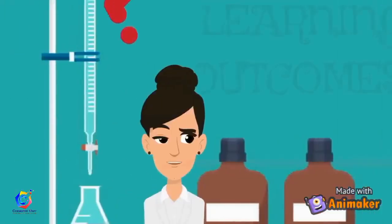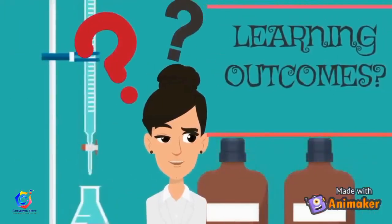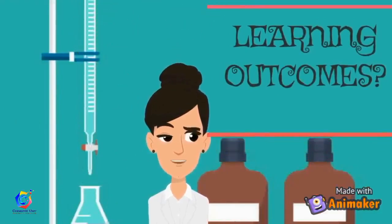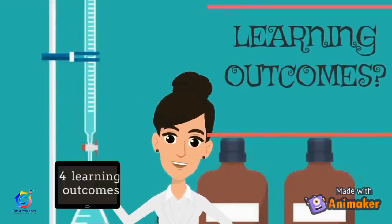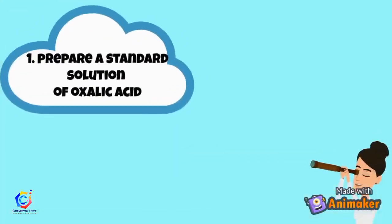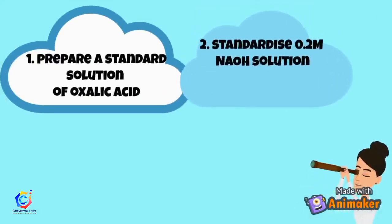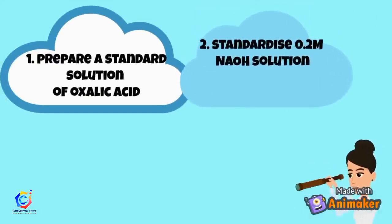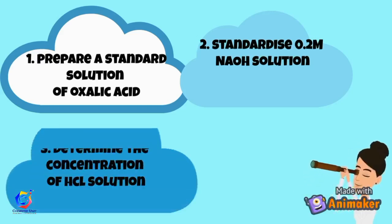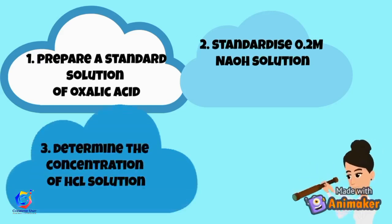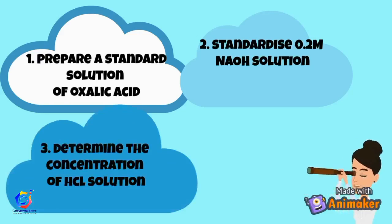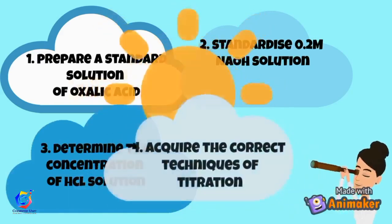Do you know how many learning outcomes are in this experiment? There are 4 learning outcomes. First, prepare a standard solution of oxalic acid. Second, standardize 0.2 molar NaOH solution. Third, determine the concentration of HCl solution. Fourth, acquire the correct techniques of titration.